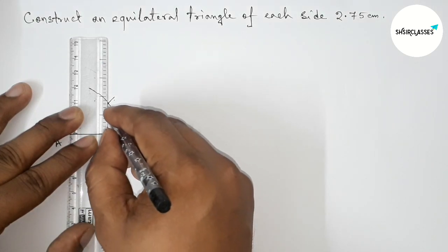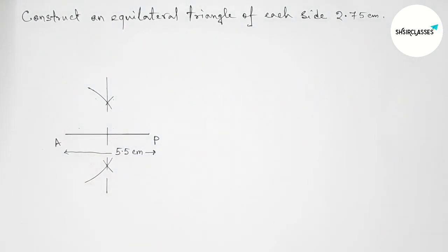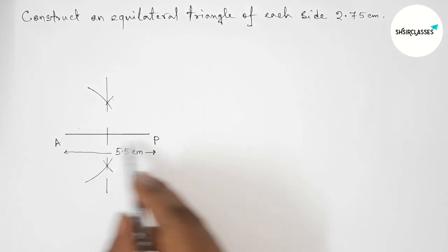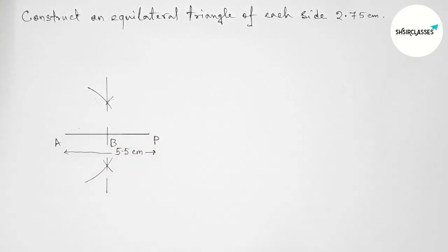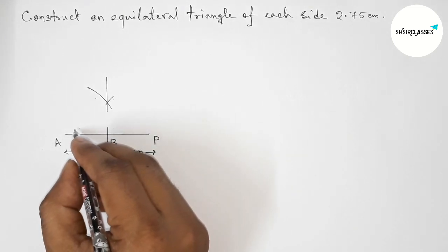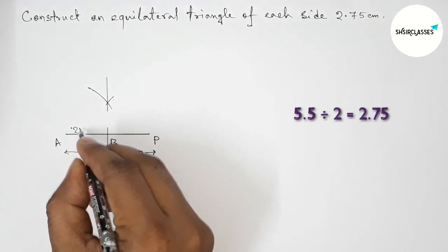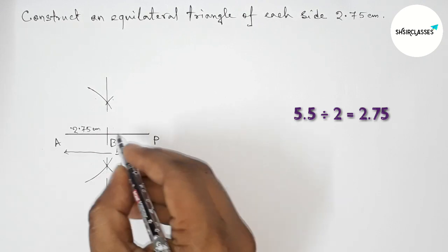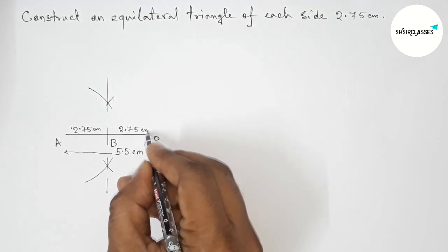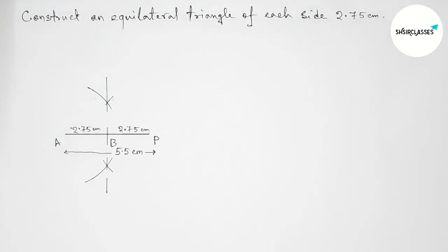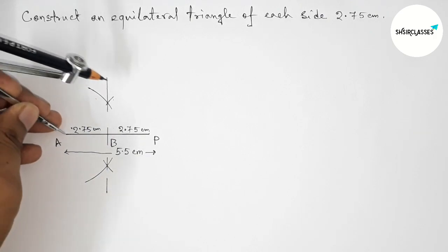Now taking here a point B. So now AB is 2.75 centimeters and BP also 2.75 centimeters. Next, taking the length AB, that is 2.75 centimeters with the help of compass.